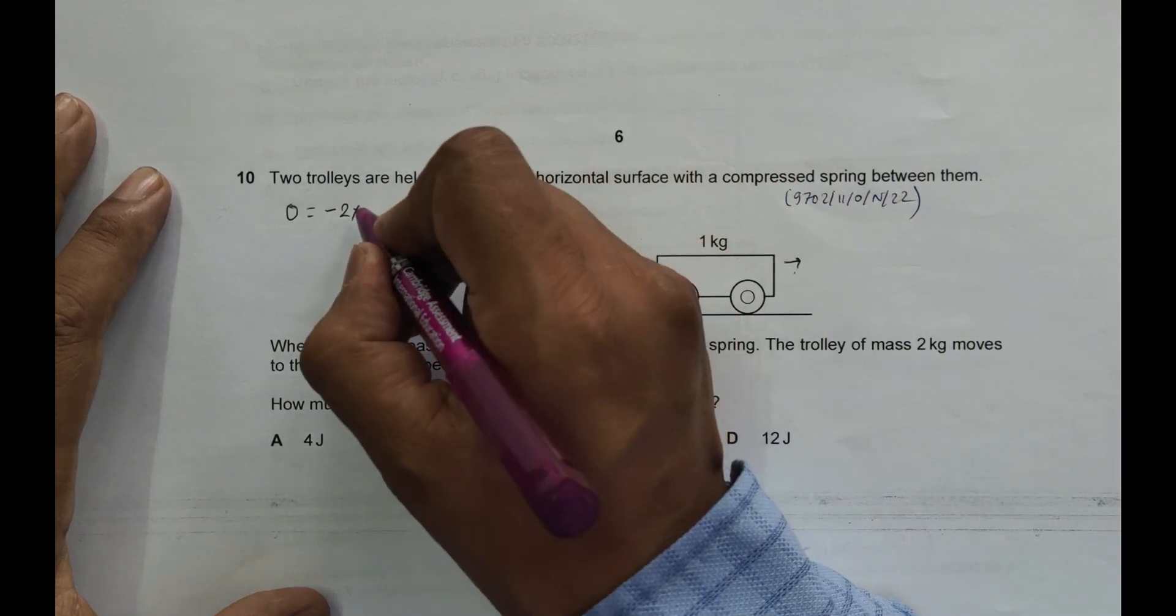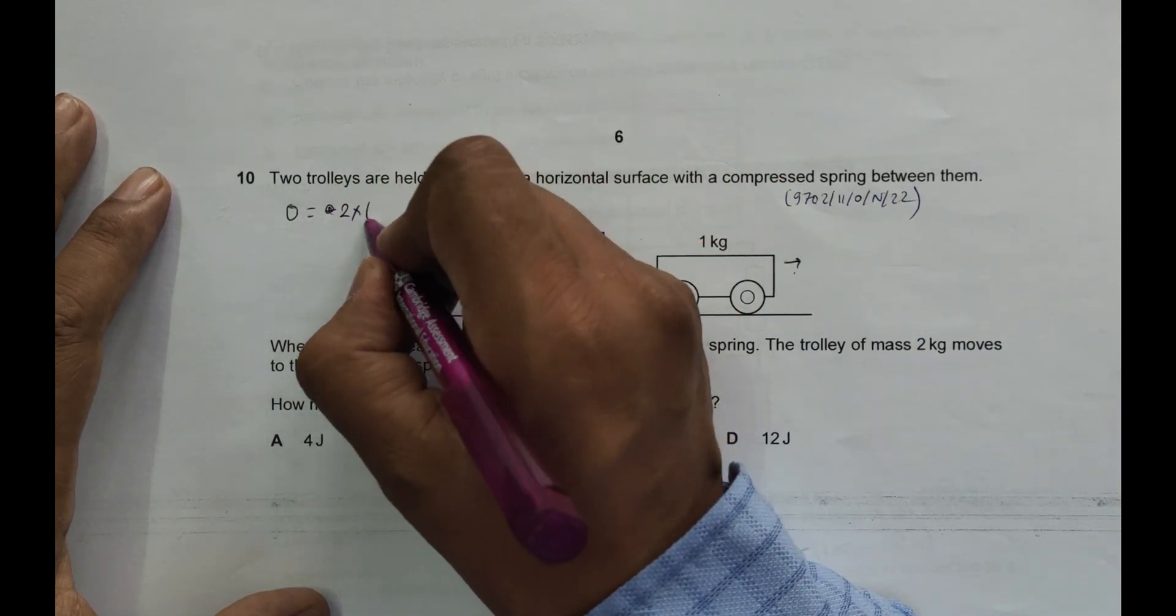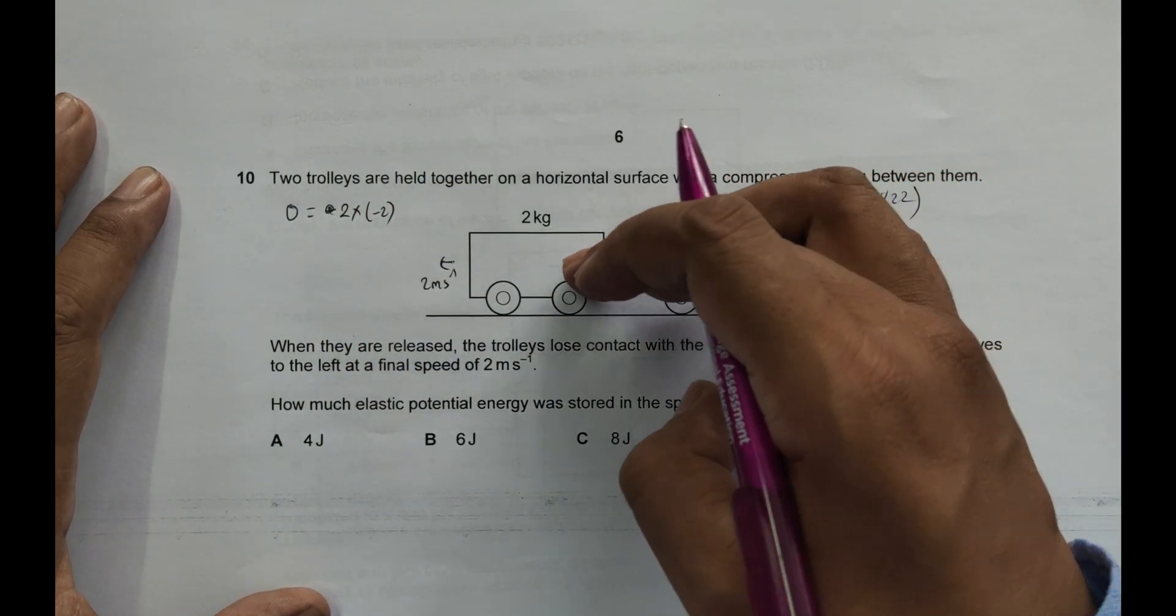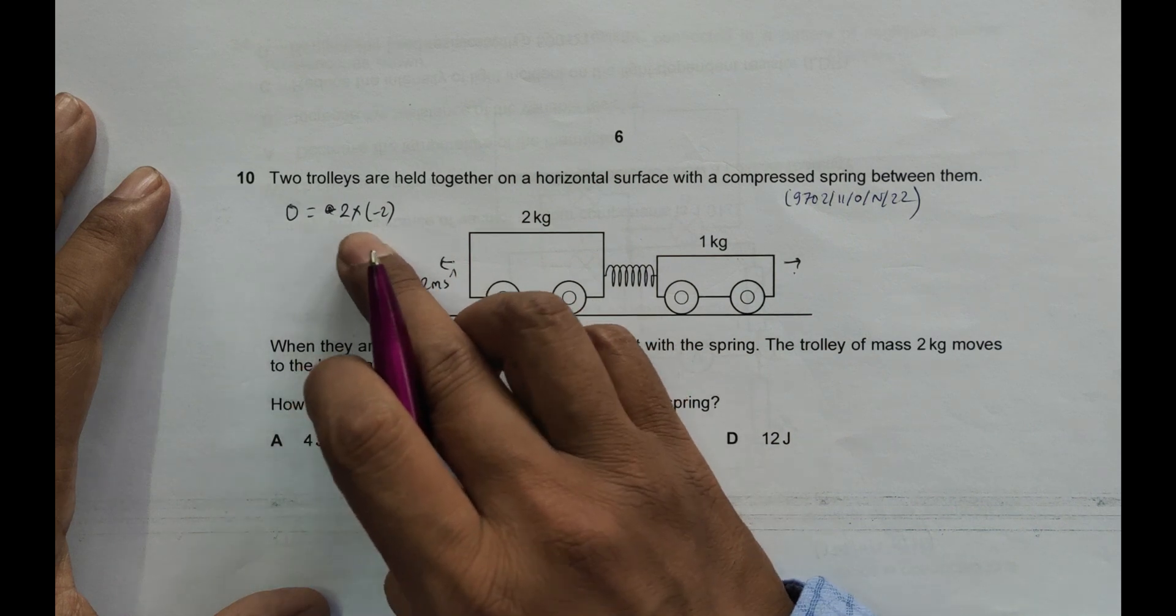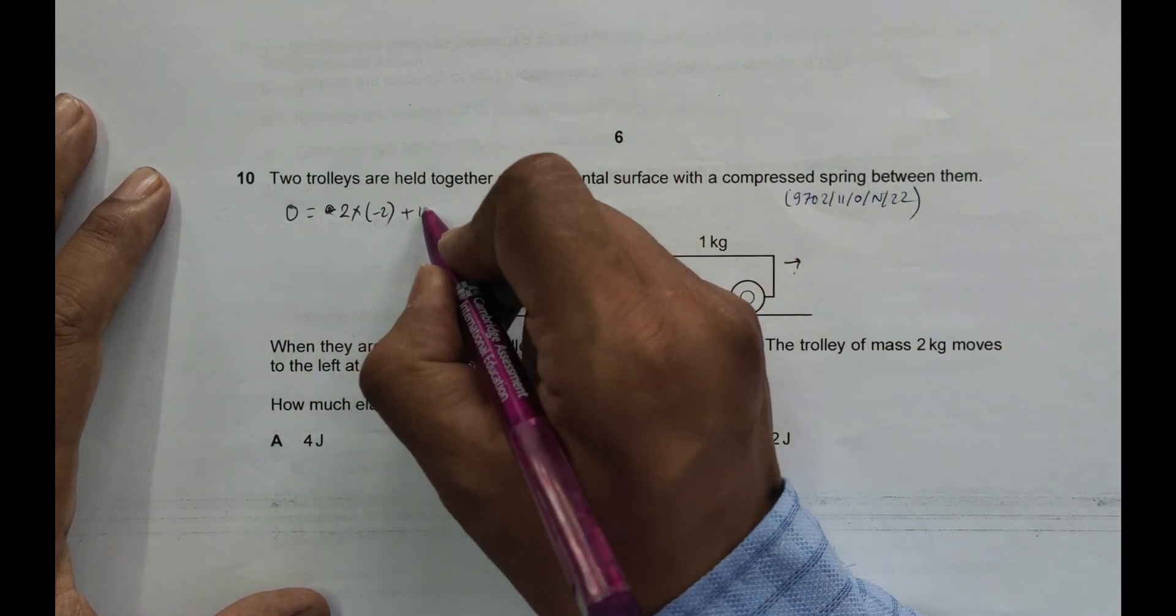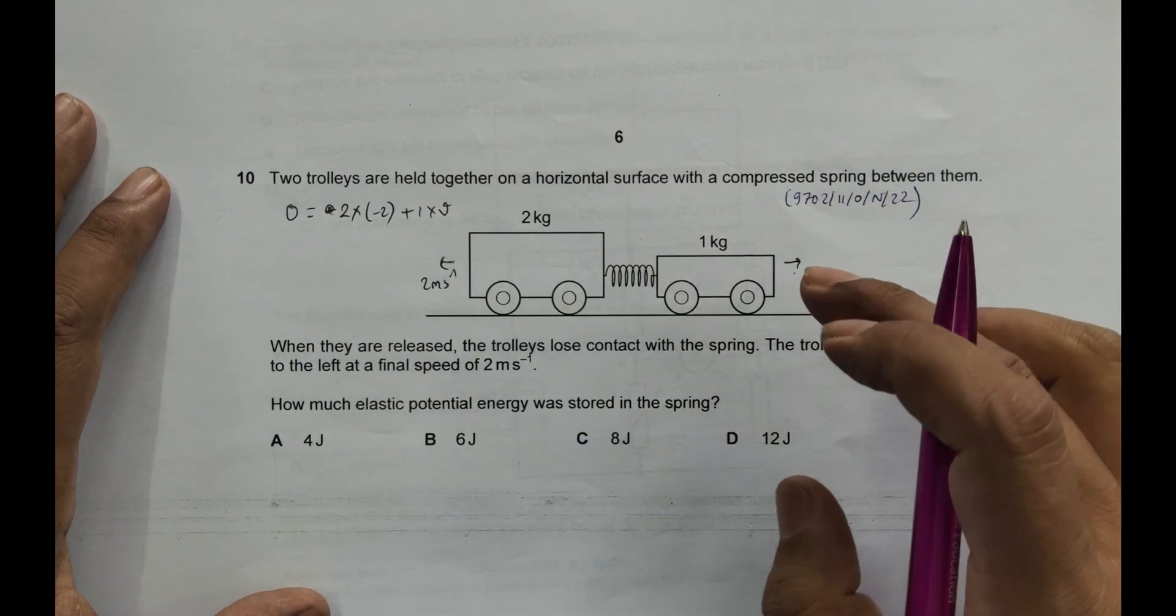When we take standards, the velocity in this direction is taken negative, so 2 into minus 2 plus the mass here moving is 1, 1 into this V. V is the velocity of this trolley, so it should be equal to minus 4 plus V.